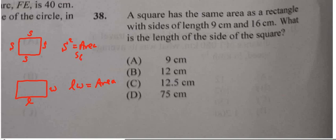This one is a square. This one is a rectangle. Now, we're told that the areas are the same, right? That means S squared equals L times W.